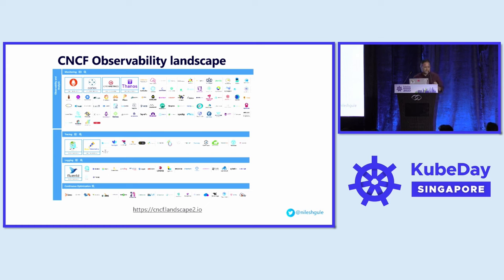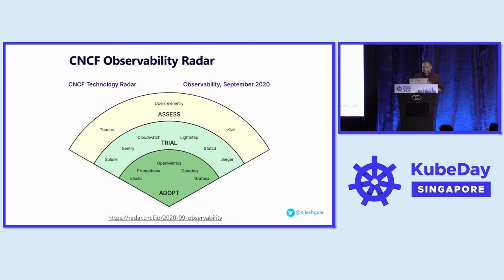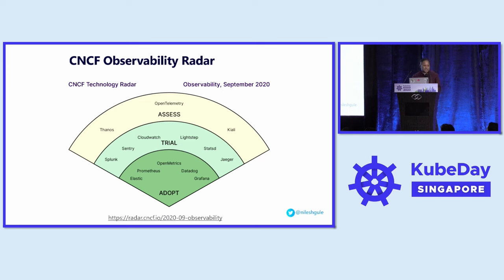We'll focus today on the observability landscape. Some time back — almost four years ago now — there was also a CNCF Observability Radar created, similar to the ThoughtWorks Technology Radar, where CNCF gives its views on what you can adopt, what you should trial, and what you should assess based on project maturity. Over the last four years, these different projects have gone through different phases — some moving from trial to adopt.